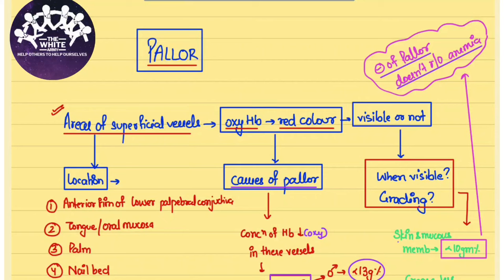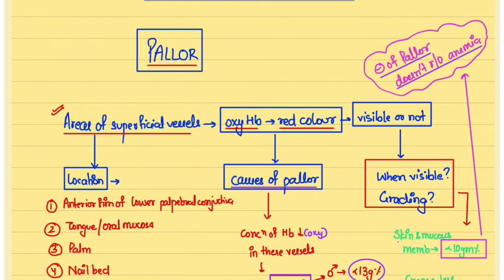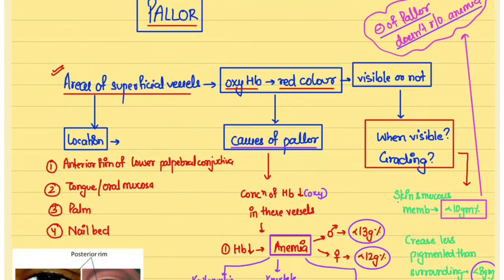We'll be discussing pallor. In areas of the body where superficial vessels are present, the flow of red oxygenated hemoglobin through these vessels produces a reddish color. If this reddish change is present, we consider it normal, whereas if it is decreased or absent, we consider it pallor.